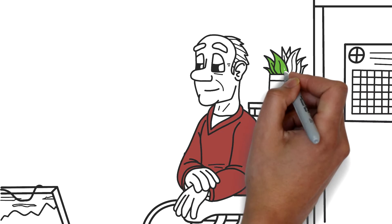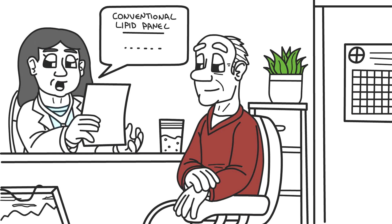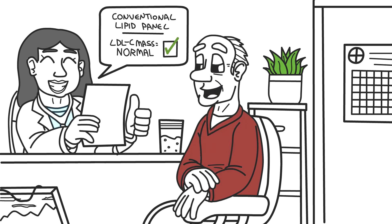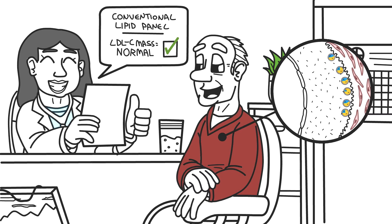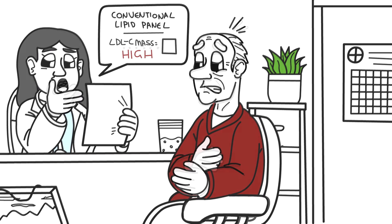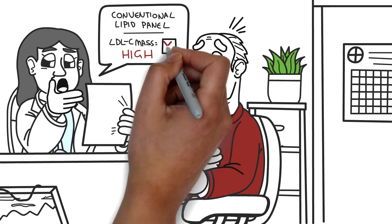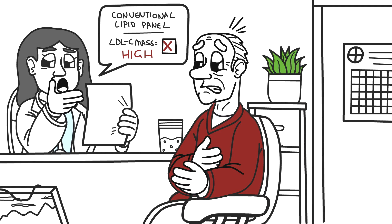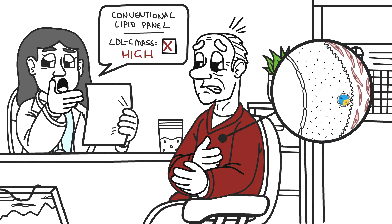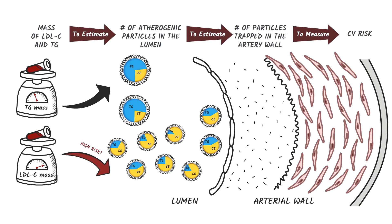Why is that important? Because your patient's conventional lipid panel could show a normal LDL-C mass, and you could decide that they present a low cardiovascular risk, even if they have a large number of very small LDL particles in the lumen of their arteries, which could get trapped in the arterial wall. Or conversely, their conventional lipid panel could show a high mass of LDL-C, and you could conclude that your patient presents a high cardiovascular risk, even if they have a smaller number of large LDL particles, which are less likely to get trapped in the arterial wall. And the same risk of error holds when looking at the mass of triglycerides to estimate the number of VLDL particles in the lumen.